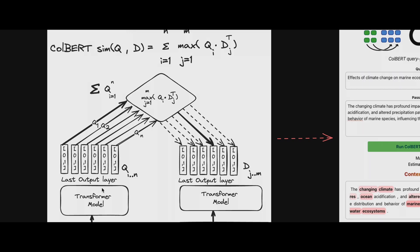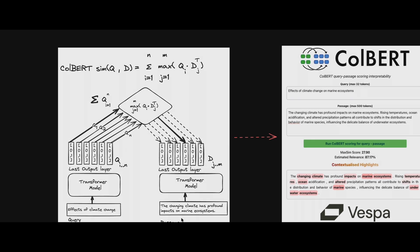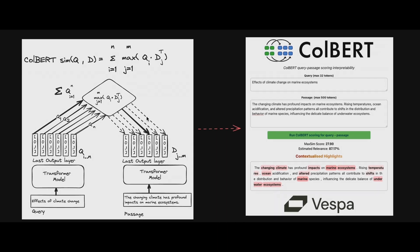Looking at this image: you have the transformer model, you have a query, and you have vector representations for each token of the passage. The similarity between query Q and document is the maximum similarity between each query token Qi and each document token Dj — each query token is matched with each document token, and the result is calculated accordingly.